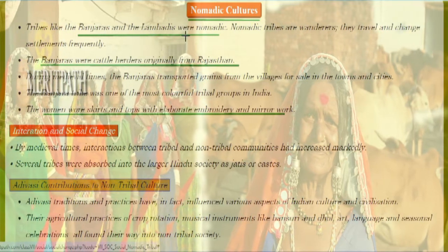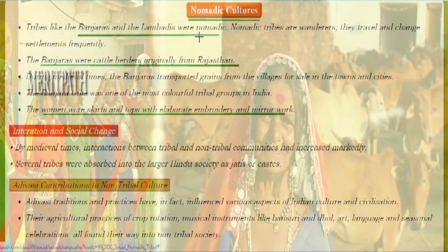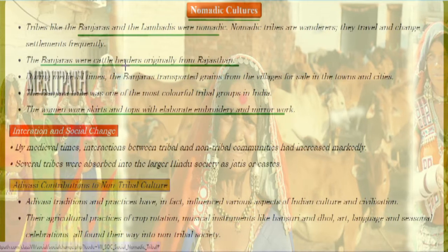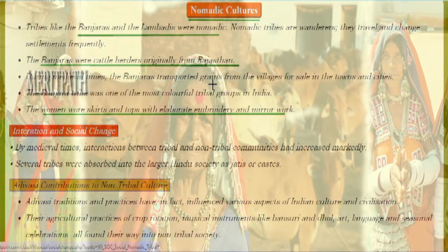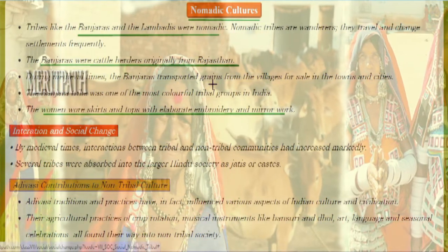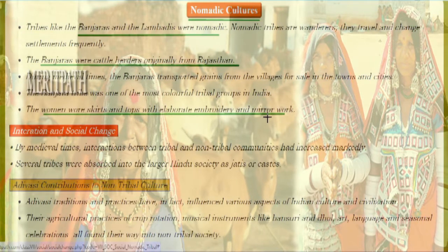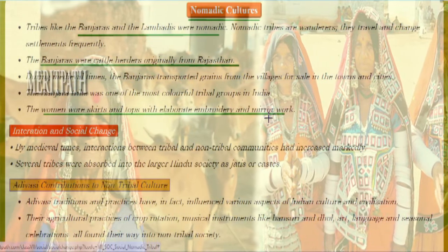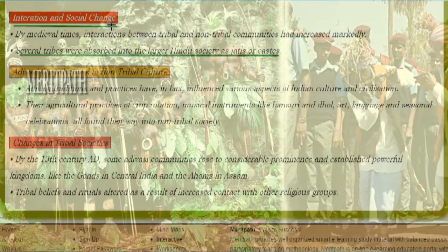The Banjara and Lambadi tribes were nomadic people — people who travel frequently and change their settlements often. The Banjara were originally cattle herders originating from Rajasthan. They transported grains from villages to cities and towns for sale. The Banjara are also a colorful tribal group — their women wear skirts and tops with beautiful embroidery and mirror work. Even today, Banjaras and Lambadis appear in television programs wearing bright, colorful clothes with mirror work.